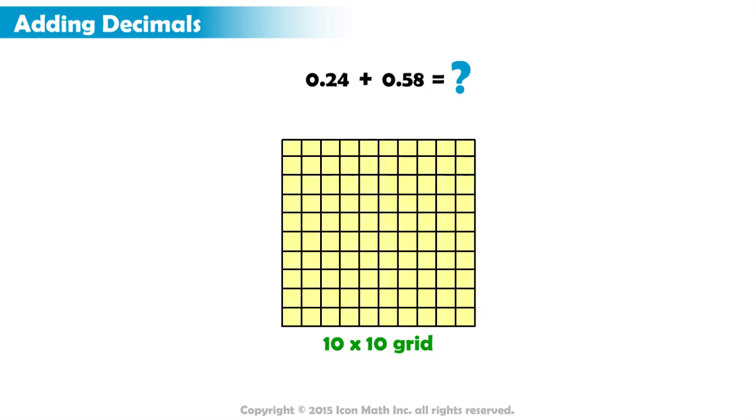Think of the entire grid as representing one whole with 100 equal parts. So each square on the grid represents 1 out of 100 or one hundredth. Now we want to represent our two addends on the grid.